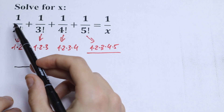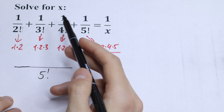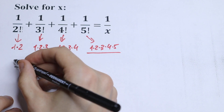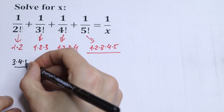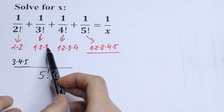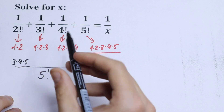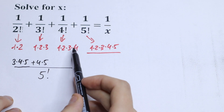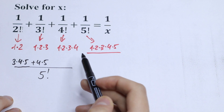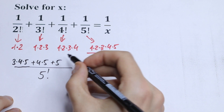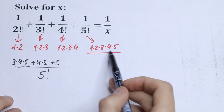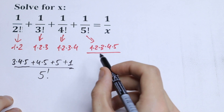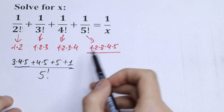What will we have in the 1 over 2 factorial term? We will have the product 3 times 4 times 5. What will we have in the next term? Only 4 times 5, so plus 4 times 5. What will we have in the next? Only 5, so plus 5. And the last term is plus 1, because we don't need any more numbers.